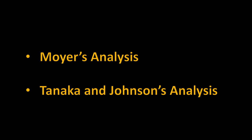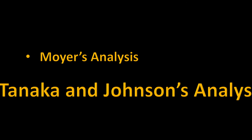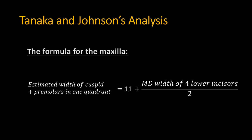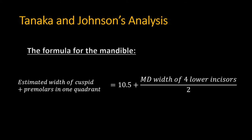The prediction of cuspids and bicuspids size can also be done with Tanaka-Johnson's analysis. Tanaka and Johnson validated Moyer's probability charts and proposed a simple formula to calculate the probable cuspids and bicuspids mesiodistal width. The procedure starts the same way: measure the greatest mesiodistal width of each mandibular incisor, divide the sum by 2, then add 11 for the upper and 10.5 for the lower teeth to estimate the width of cuspids and bicuspids in one quadrant.